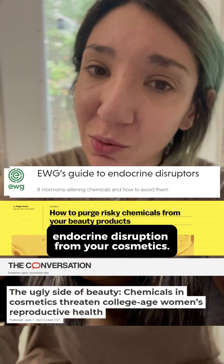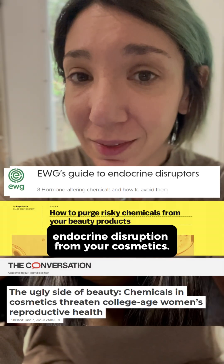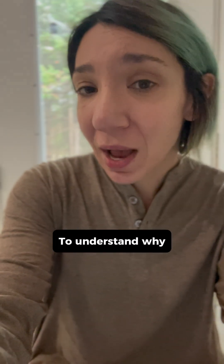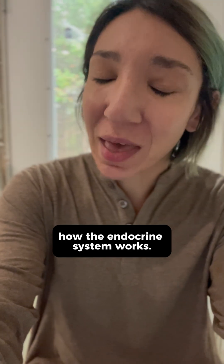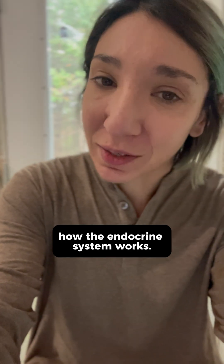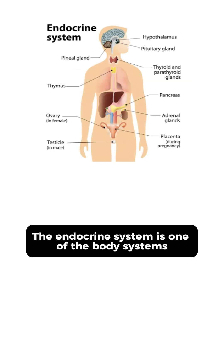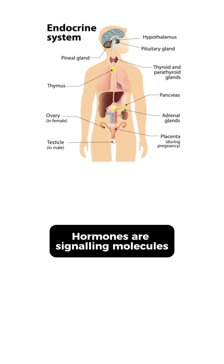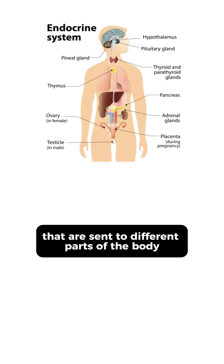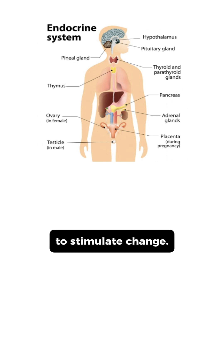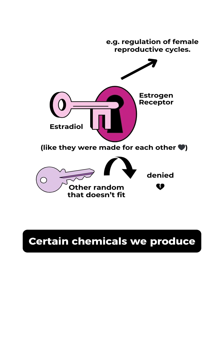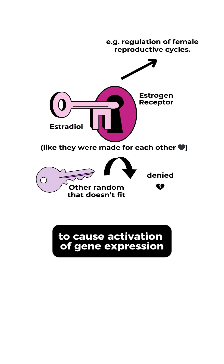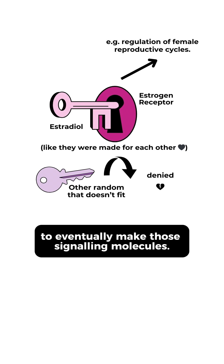You really don't have to worry about endocrine disruption in your cosmetics. To understand why, you have to know a little bit more about how the endocrine system works. The endocrine system is one of the body systems really focused on hormones — signaling molecules that are sent to different parts of the body to stimulate change. Certain chemicals we produce will fit into certain receptors to cause the activation of gene expression to eventually make those signaling molecules.